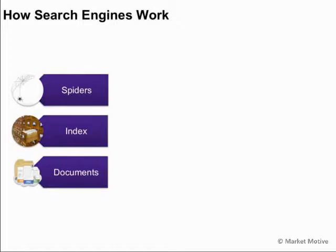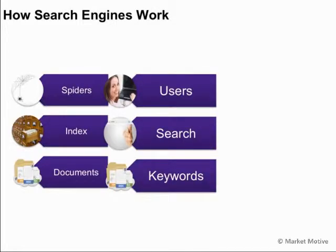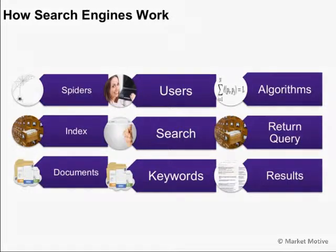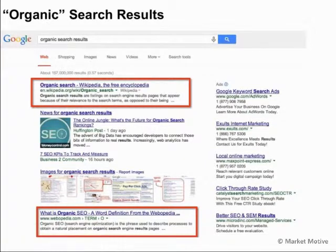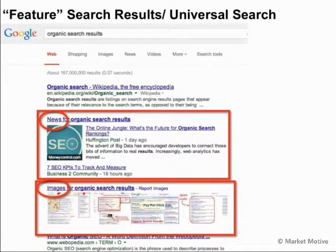When we do a search for 'what is SEO', we can see pay-per-click ads at the top or on the sides, and organic search results — those indexed by spiders and returned without any paid placement. We also see what we call featured, universal, or blended search results — terminologies for news, images, and other types of search features triggered at the query level when a user searches for something.